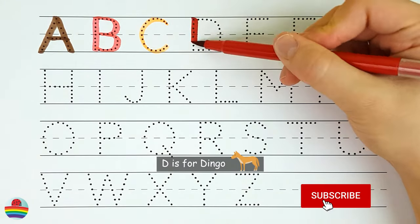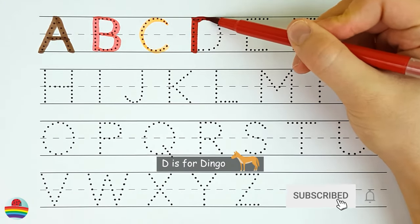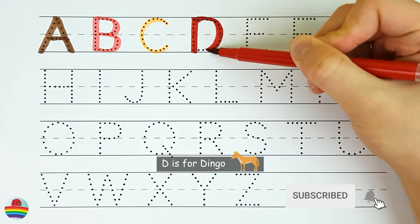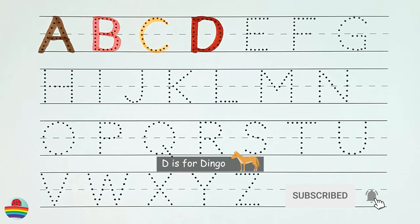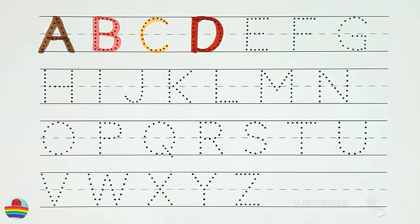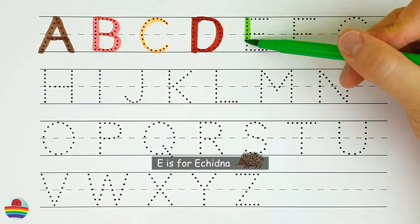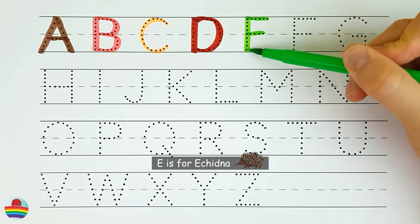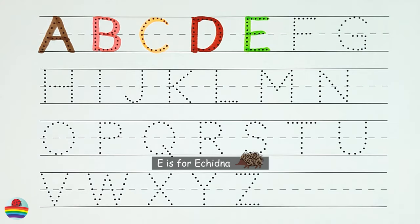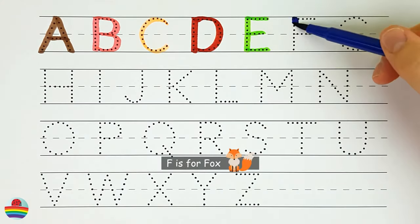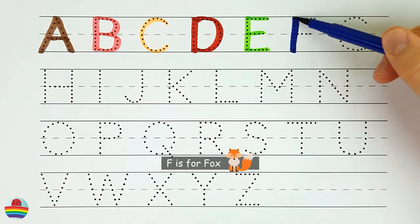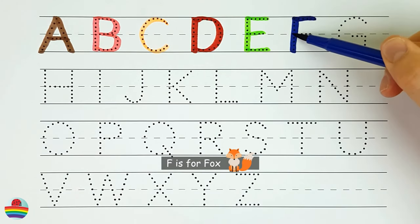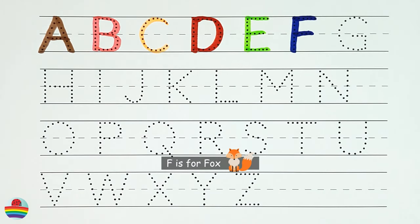D. D is for dingo. E. E is for ekina. F. F is for fox.